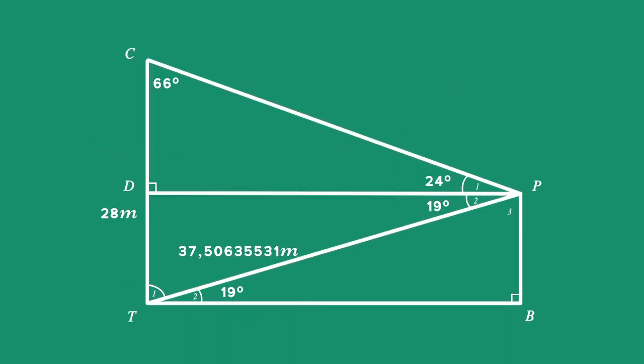Now work in triangle PBT to find TB. Since we are working with a right angle triangle, we can solve the triangle by using the definitions of the trigonometric ratios.